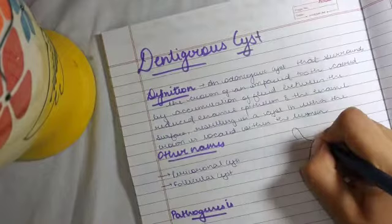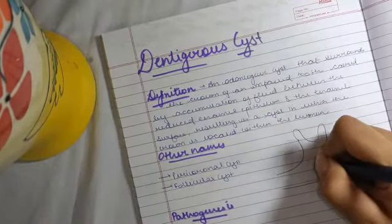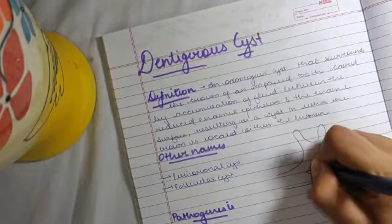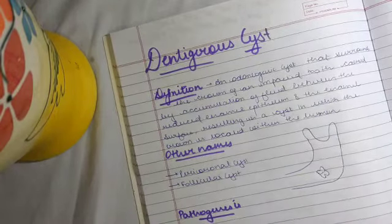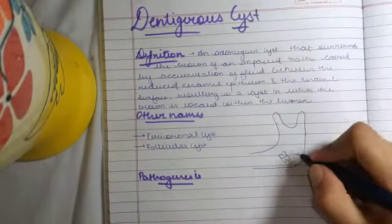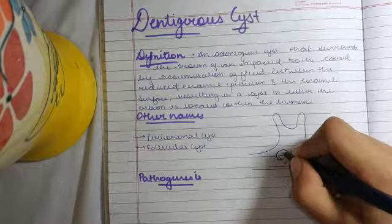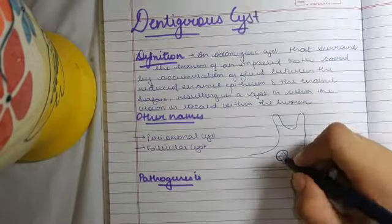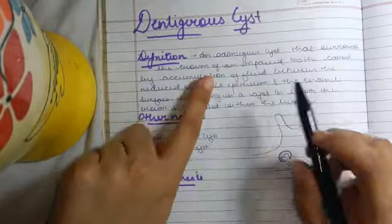Suppose this is our mandible, and we have a tooth which is impacted. An impacted tooth is a tooth which has to erupt, but over the crown a cyst appears. So this is the cyst.